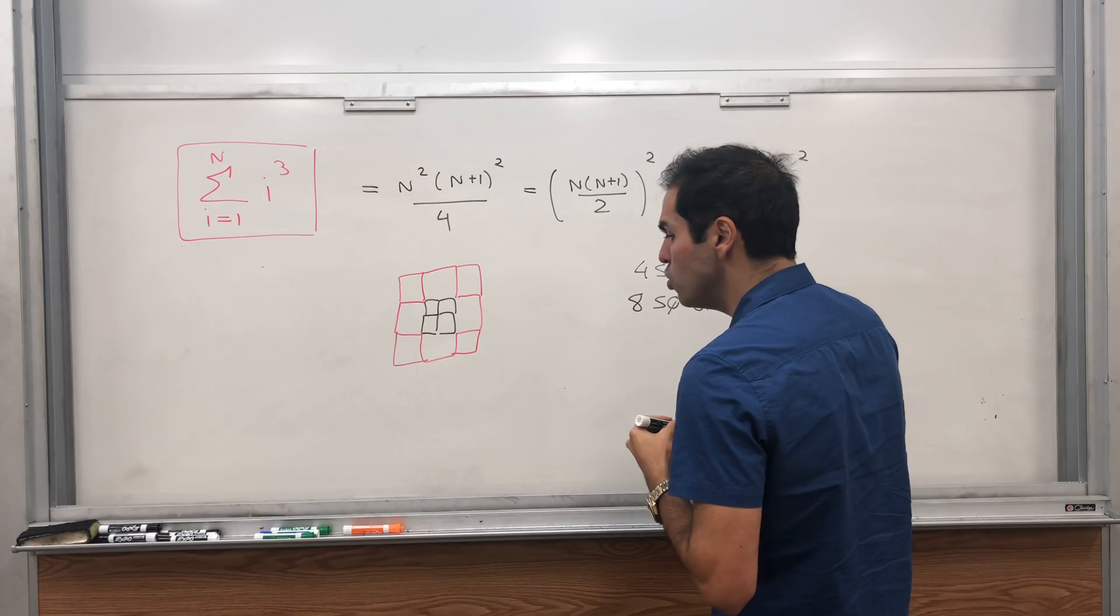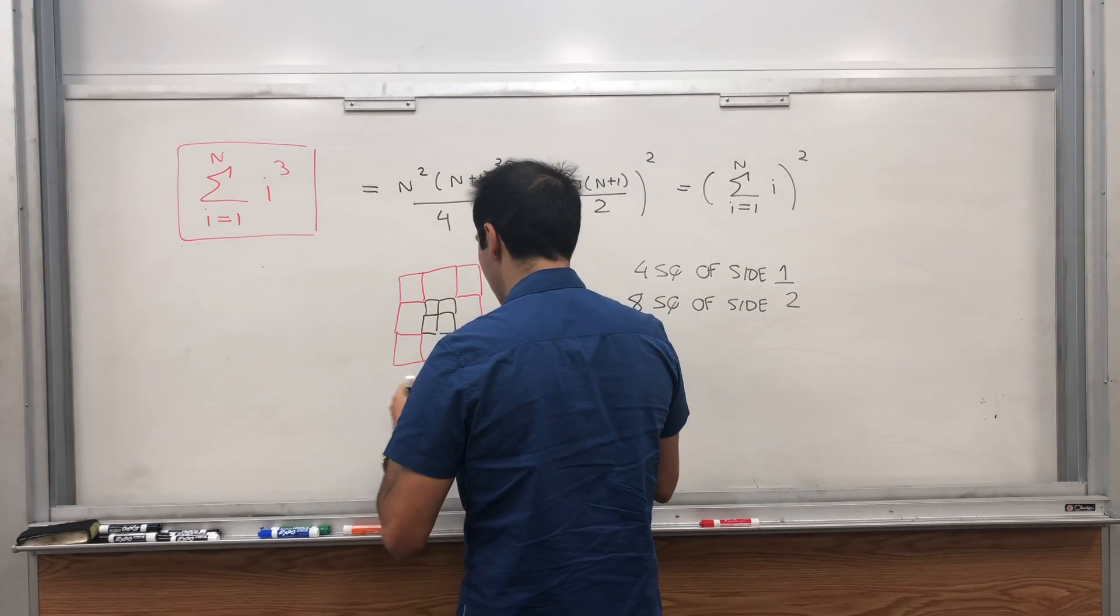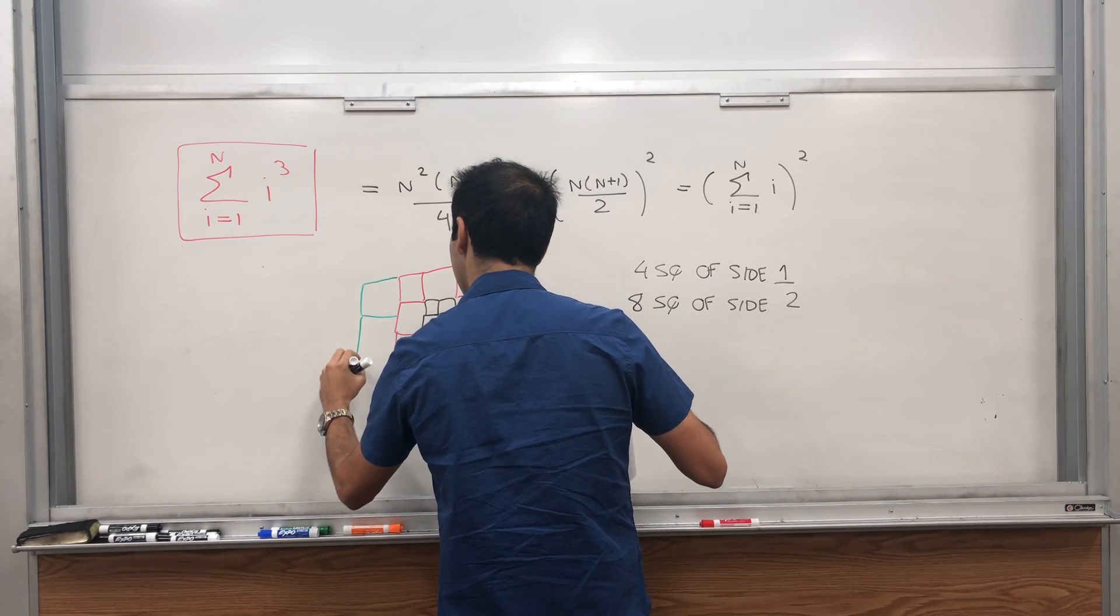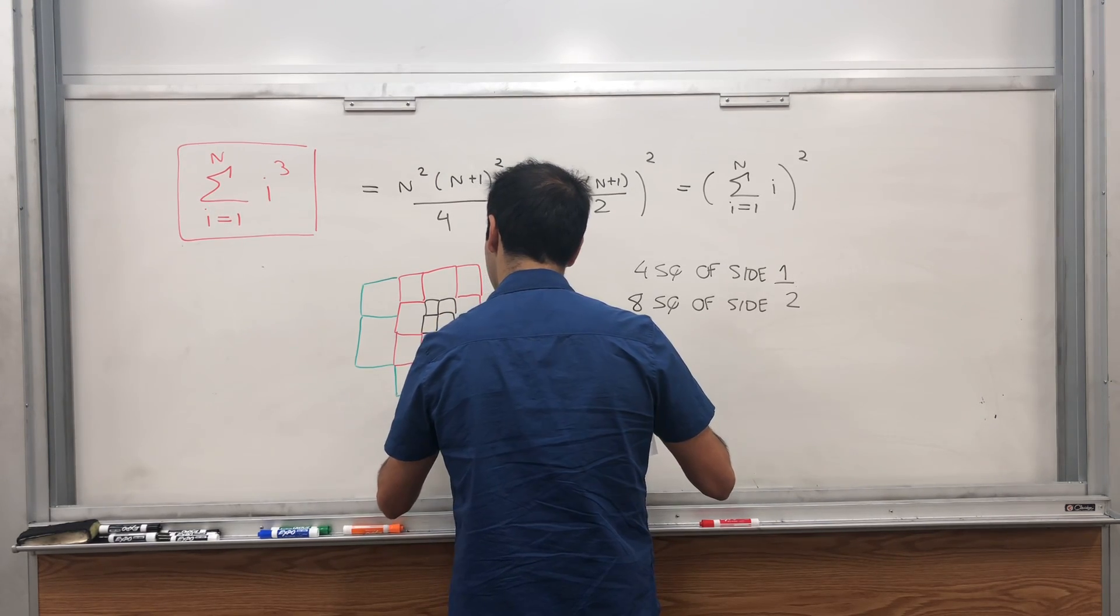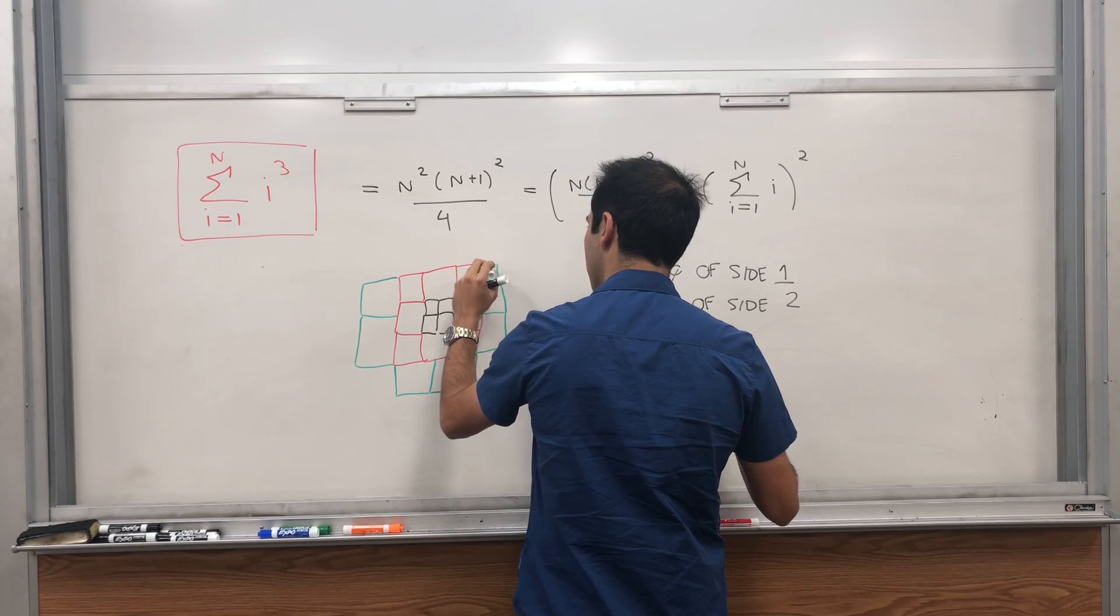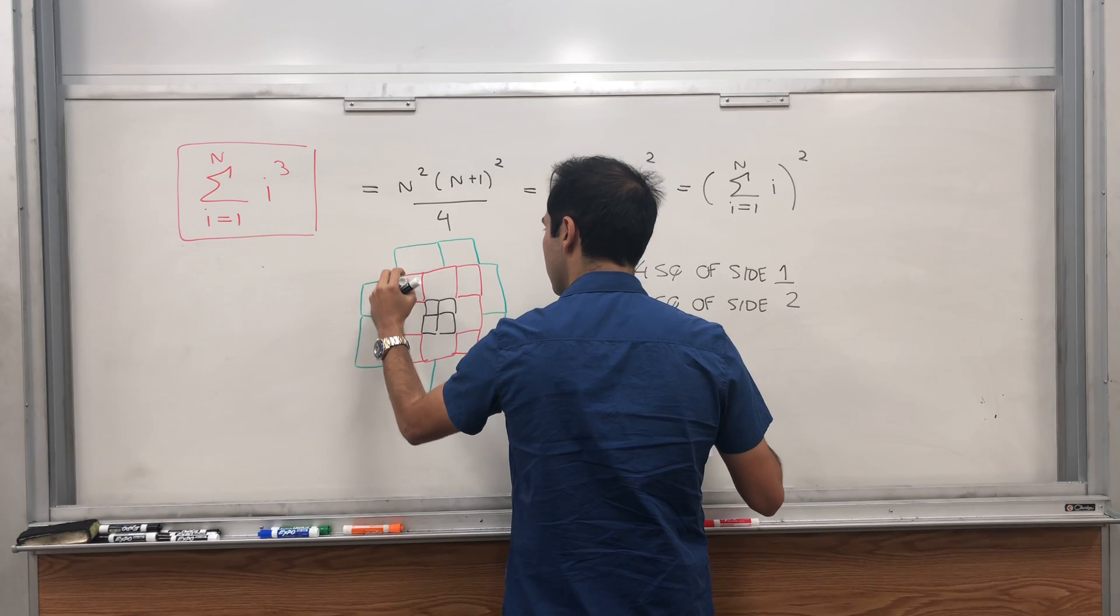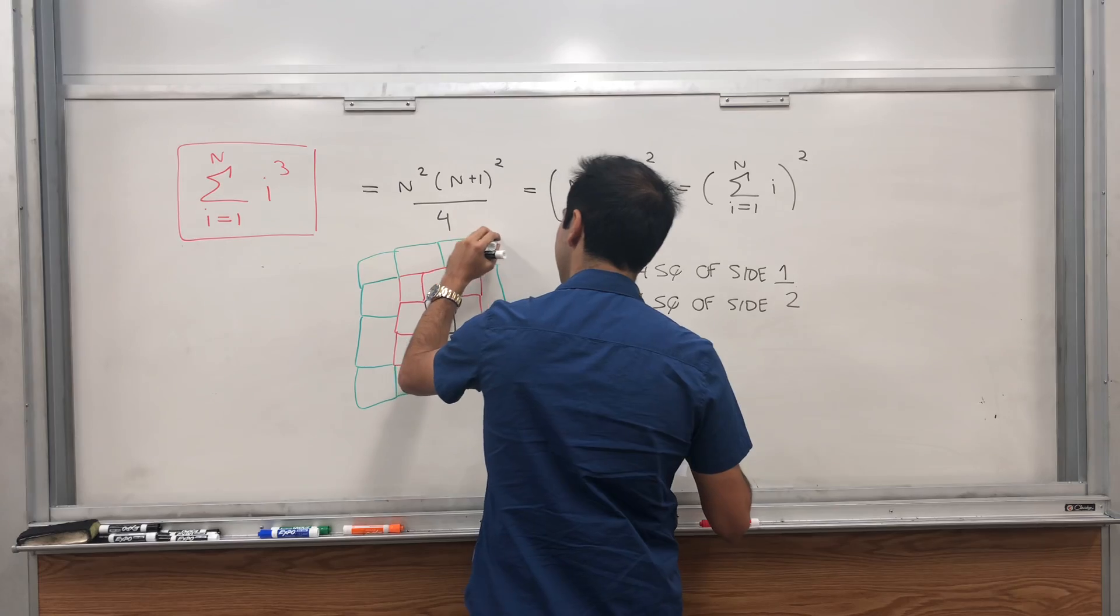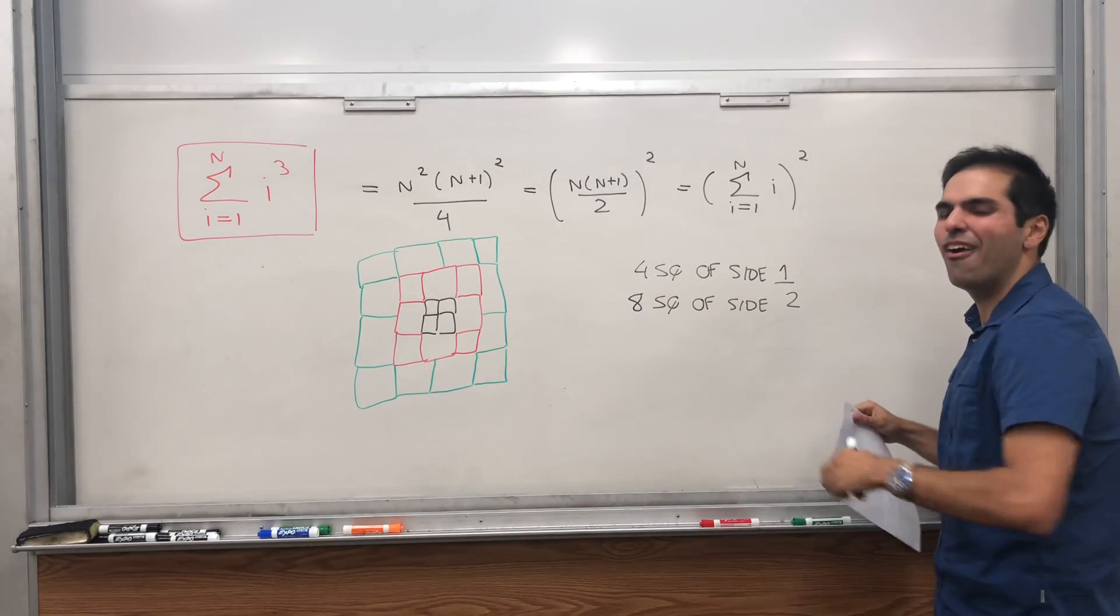And then continue, do 12 squares of side 3, which I believe looks something like that. 1, 2, 3, 4, 5, 6, 7, 8, 9, 10, 11, 12. Look how pretty it is. It's a math flower if you want.